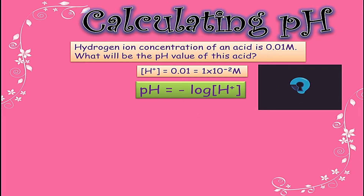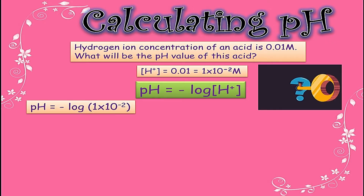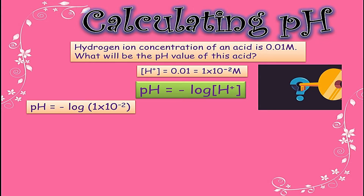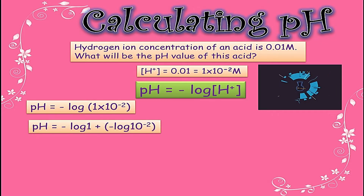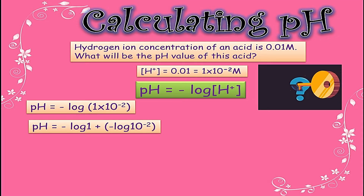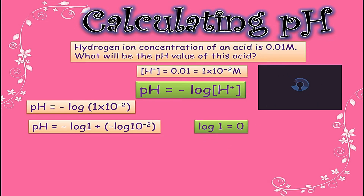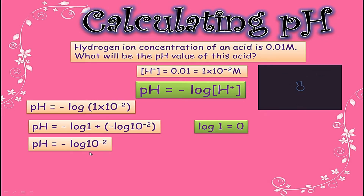pH = -log[H⁺]. We put the value of hydrogen ion concentration, which was 1 × 10⁻², into the formula. Opening the bracket, minus log will multiply with 1 as well as with the exponent −2. So it becomes: pH = −log(1) + (−log(10⁻²)). Log 1 is always 0, so that term becomes 0. We get pH = −log(10⁻²).